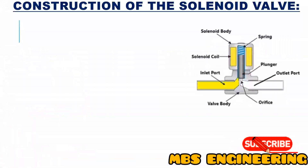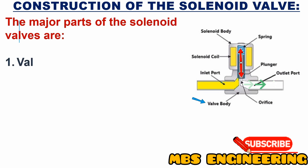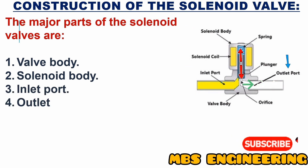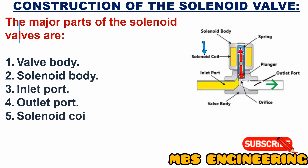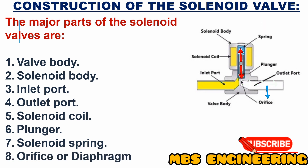Next, we will understand the construction of the solenoid valve. The major parts of the solenoid valve are: the first part is the valve body, the second part is the solenoid body, the third part is the inlet port, the fourth part is the outlet port, the fifth part is the solenoid coil, the sixth part is the plunger, the seventh part is the solenoid spring, and the eighth part is the orifice or diaphragm.